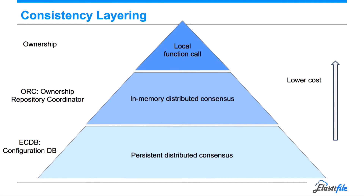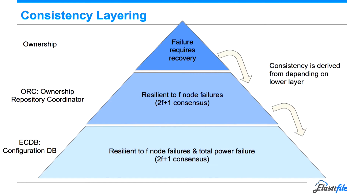The ORC runs on multiple nodes but uses in-memory consensus, so it does two rounds of messages without any disk IO. The ECDB needs to be persistent, so it's similar to the ORC in that it's a distributed consensus, but it actually persists its state. The consistency of the top layers is derived from the lower layers. The lowest layer, the ECDB, is resilient to F node failures if it has 2F+1 nodes, and also to total power failure.